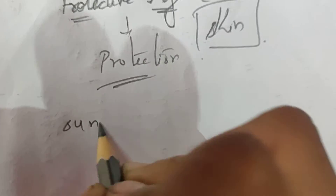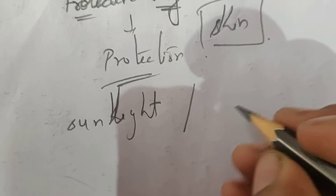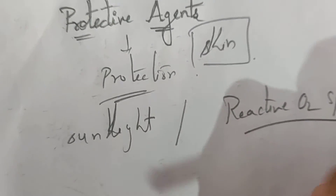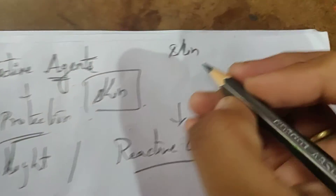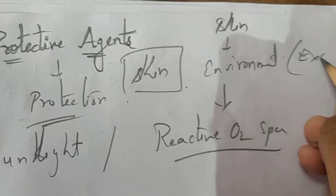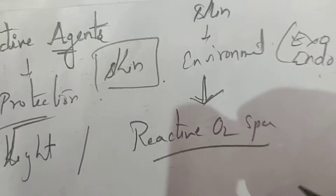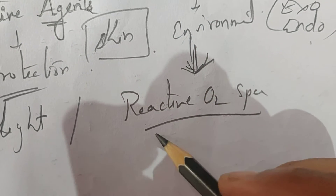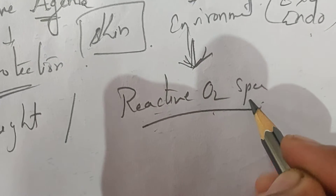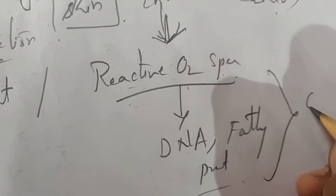When our skin gets exposed to sunlight or atmospheric harmful agents, it causes the production of reactive oxygen species. When the skin gets exposed to exogenous and endogenous harmful substances, it produces reactive oxygen species, which then react with DNA, fatty acids, and proteins, causing oxidative damage.